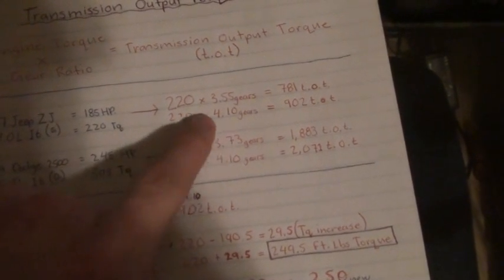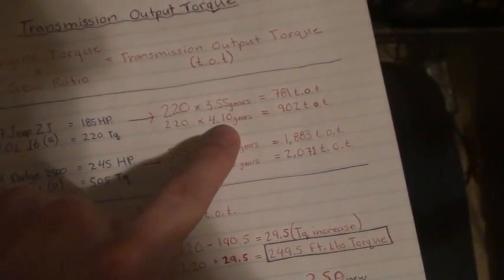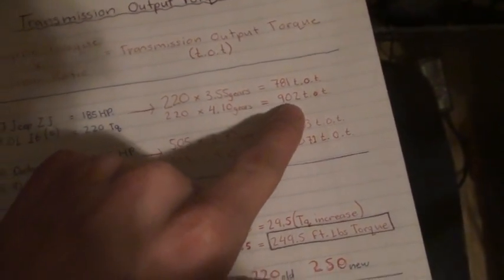For the new gearing which I want, it's the same thing. Torque times new gears equals 902 TOT.